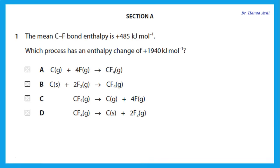The first question says the mean C-F bond enthalpy is 485 kJ per mole. That means to break one C-F bond, we need to provide 485 kJ per mole. Which process has an enthalpy change of plus 1940? If you divide 1940 by 485, that means we need to break four bonds. So the question is which reaction is breaking four C-F bonds. Remember that to break all four bonds, this is an endothermic process. So this answer is correct.